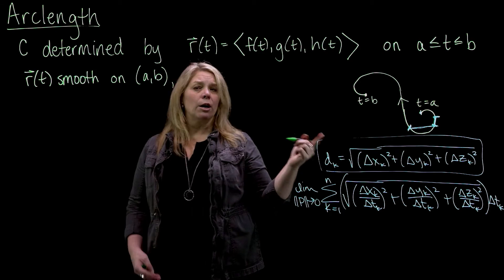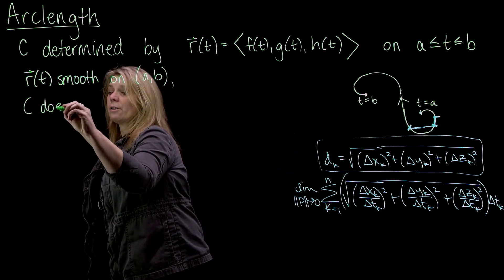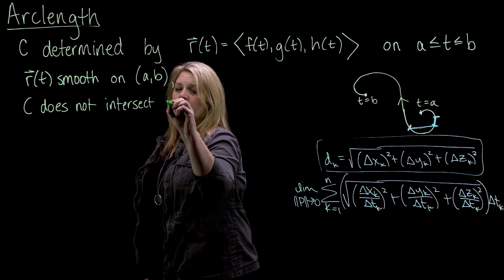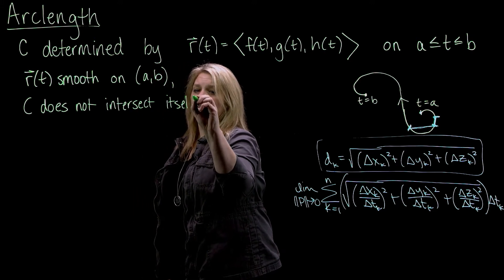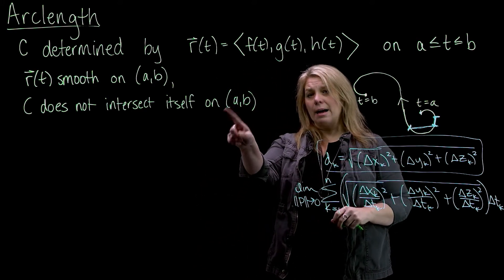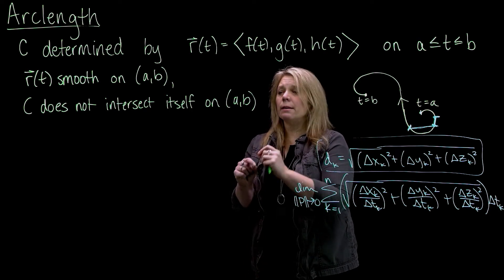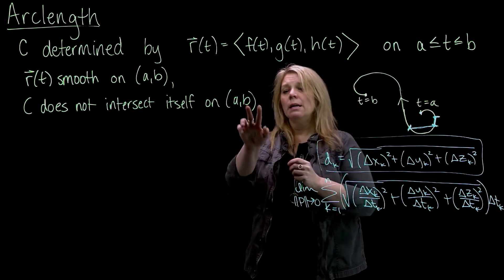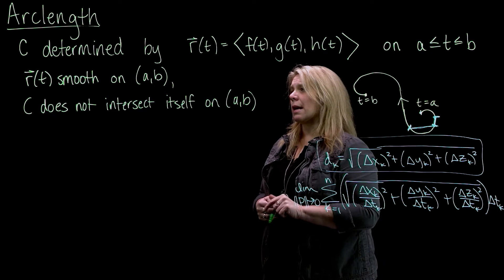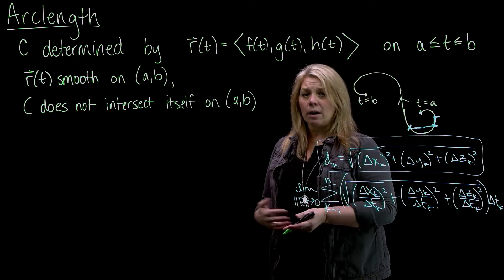And I also want my curve C to not intersect itself on the interior of that interval. So the curve could intersect itself at t equals a t equals b if it comes back around and loops back to the same starting point. If it starts at the point and then ends at that same point, it might intersect itself at that end point. But on the interior of that interval, we don't want that to intersect itself. So provided these things are true, then we can get an arc length formula.